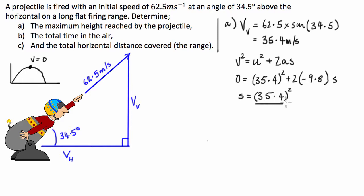divided by 2 times 9.8, and that's equal to 63.94 meters. So that's part A of our question under control.